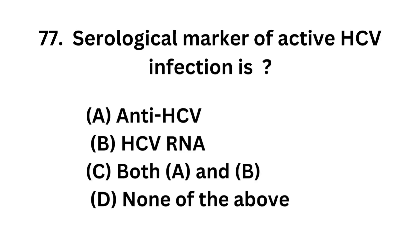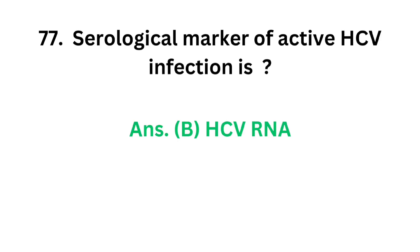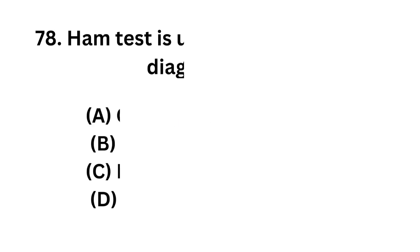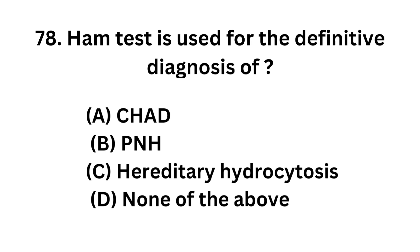Question 77. Serological marker of active HCV infection is: Option A: Anti-HCV. Option B: HCV RNA. Option C: Both A and B. Option D: None of the above. The correct answer is Option B. HCV RNA is the serological marker for active HCV infection.